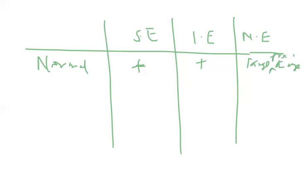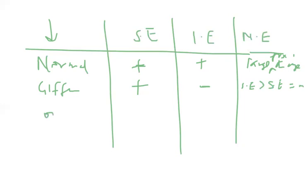Now in the case of Giffen goods: if there is a fall in price, the substitution effect is positive — it causes people to consume more. But because it is a Giffen good, the income effect is negative, and in the case of Giffen goods the income effect outweighs the substitution effect. So the net effect is negative. In the case of non-Giffen inferior goods, the substitution effect is positive and the income effect is negative, but the substitution effect outweighs the income effect, so the net effect is positive.